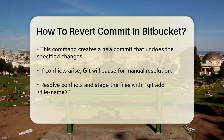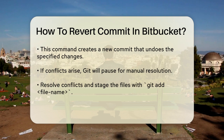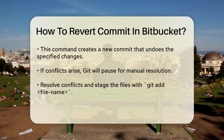This command creates a new commit that undoes the changes made by the commit you specified. If the commit you're reverting introduced changes across multiple files, git might prompt you to confirm the revert process for each conflicted file. If there are any conflicts during the revert process, git will pause and let you resolve them manually.